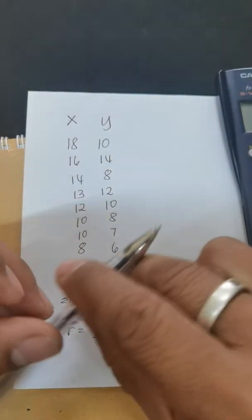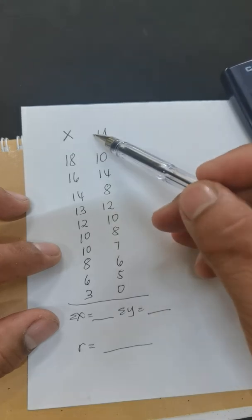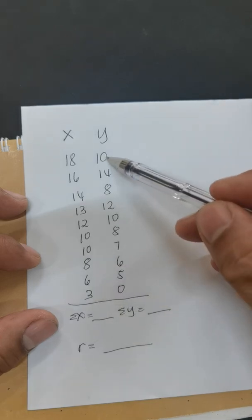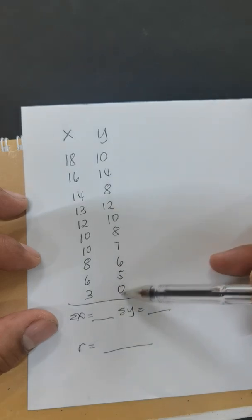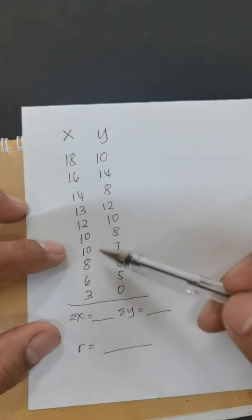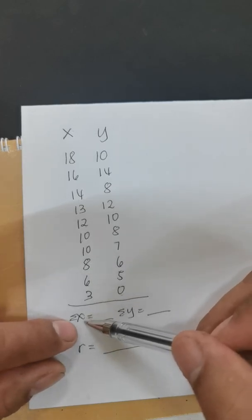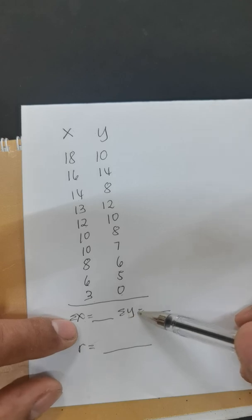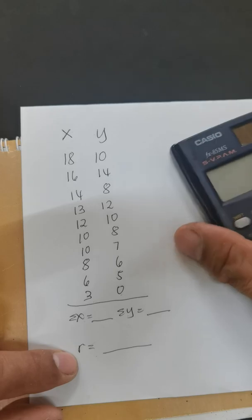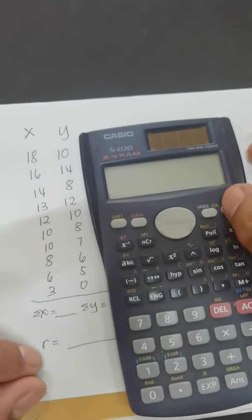Okay, so here we have two sets of data, X and Y, with these values. These are paired data, so there are 10 pairs. Our objective here is to find the sum of X, find the sum of Y, and the value of R. So we are going to use a simple scientific calculator to solve this problem.